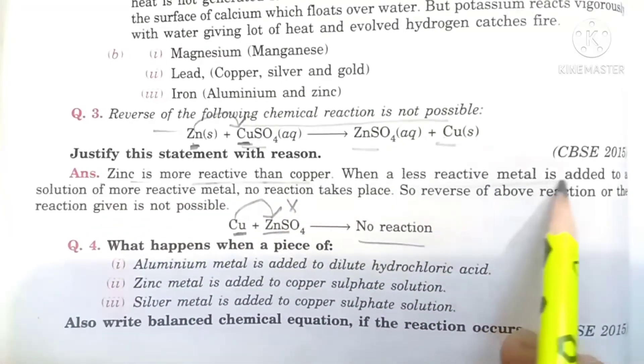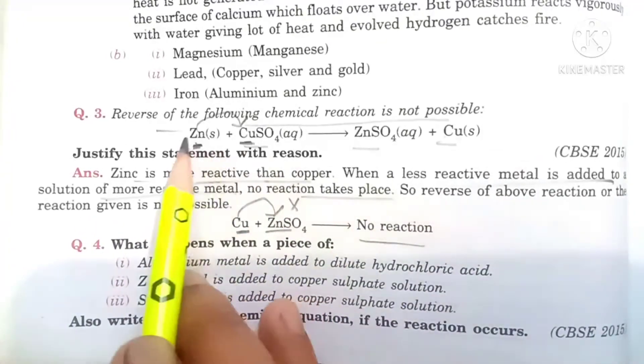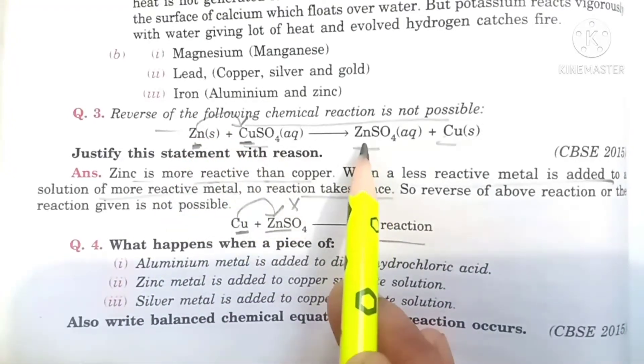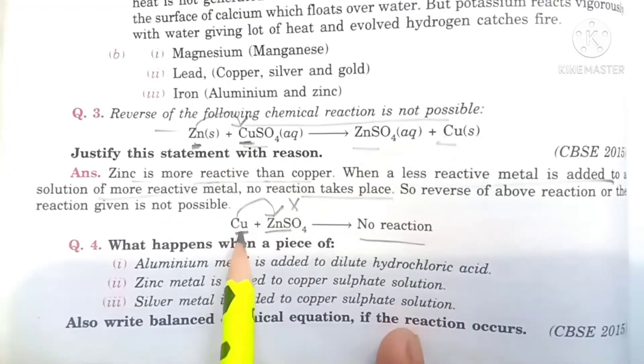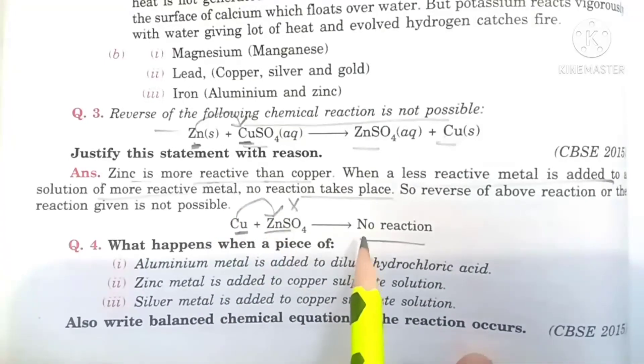When a less reactive metal is added to a solution of more reactive metal, no reaction takes place. Here reaction will take place because zinc is more reactive than copper, product formed will be zinc sulfate and copper. But in this case no reaction will take place because copper is less reactive than zinc. No metal displacement reaction takes place.